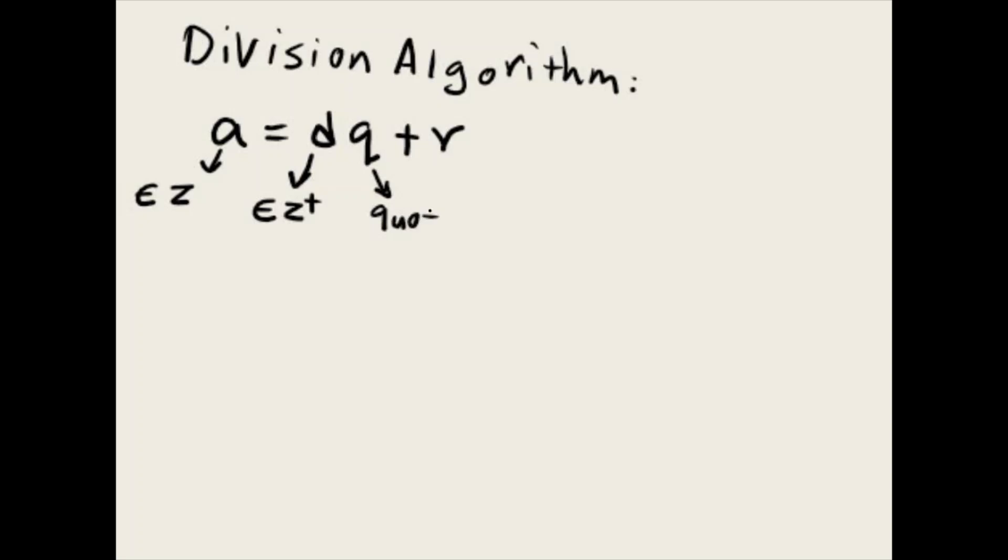Now we're going to talk about division algorithm. We have this equation: A equals DQ plus R. A should be an integer, and then D should be a positive integer. Q is called quotient here, and then R is our remainder.